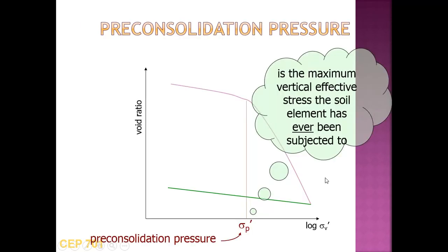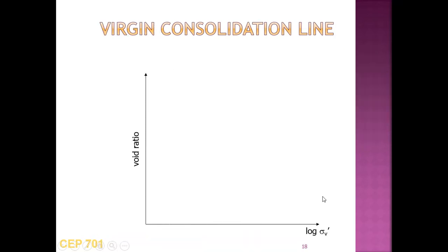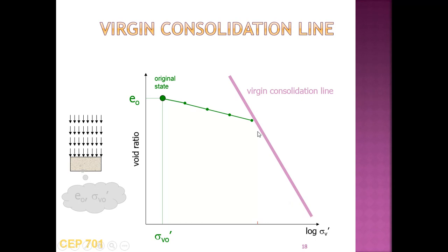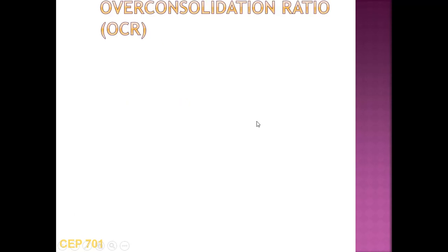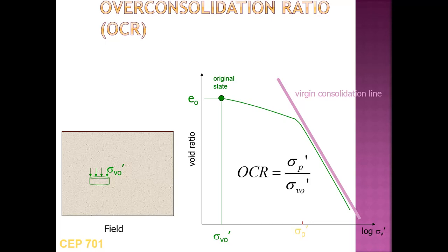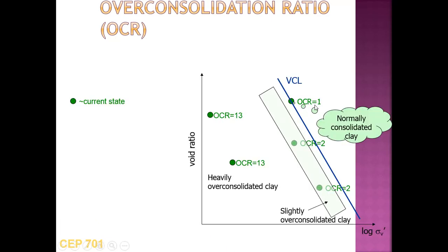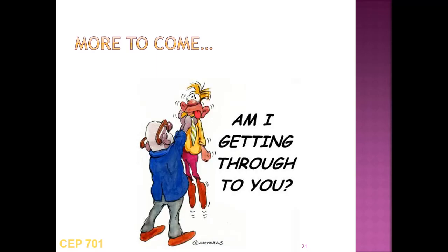Pre-consolidation pressure, denoted sigma-p', is the maximum vertical effective stress the soil element has ever been subjected to. When present stresses exceed past stresses, this defines the pre-consolidation pressure. The virgin consolidation line is the line along the compression index Cc. The over-consolidation ratio (OCR) equals the ratio of past stress to present stress; along the virgin consolidation line, OCR equals 1, corresponding to the pre-consolidation pressure point.